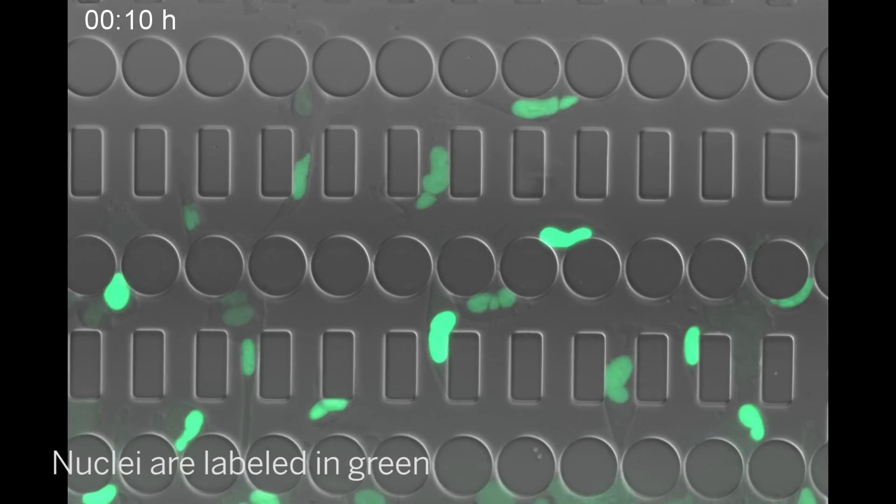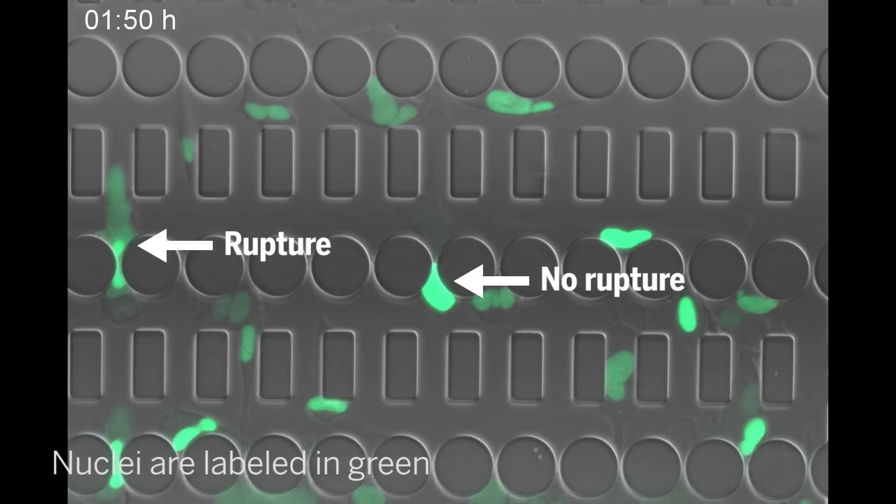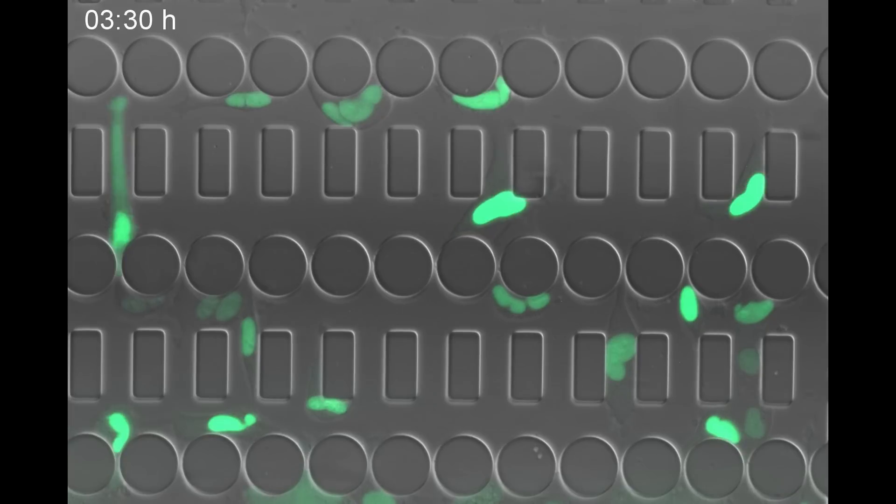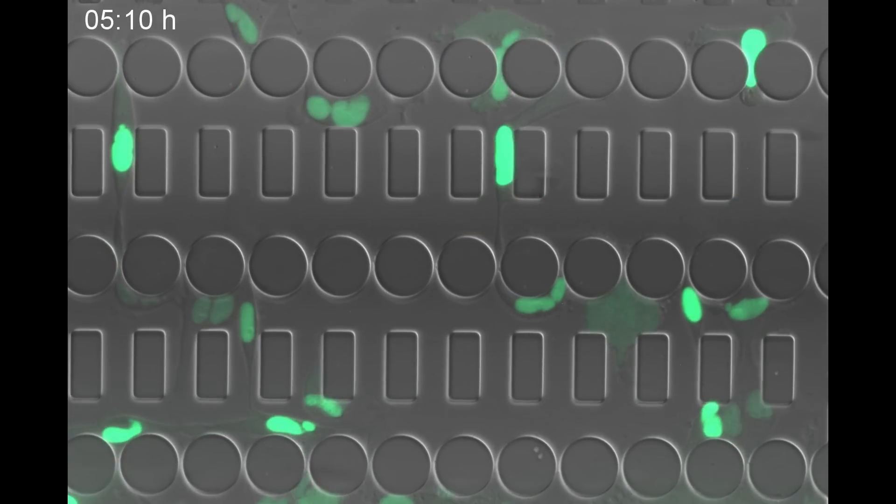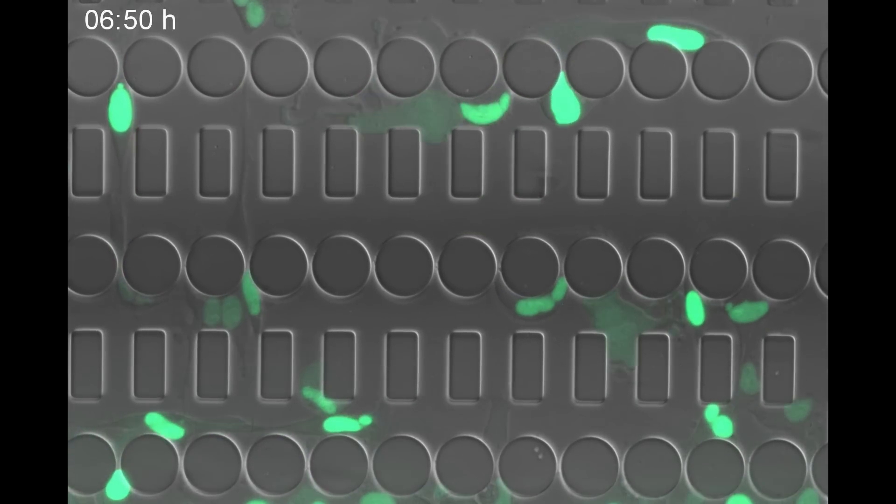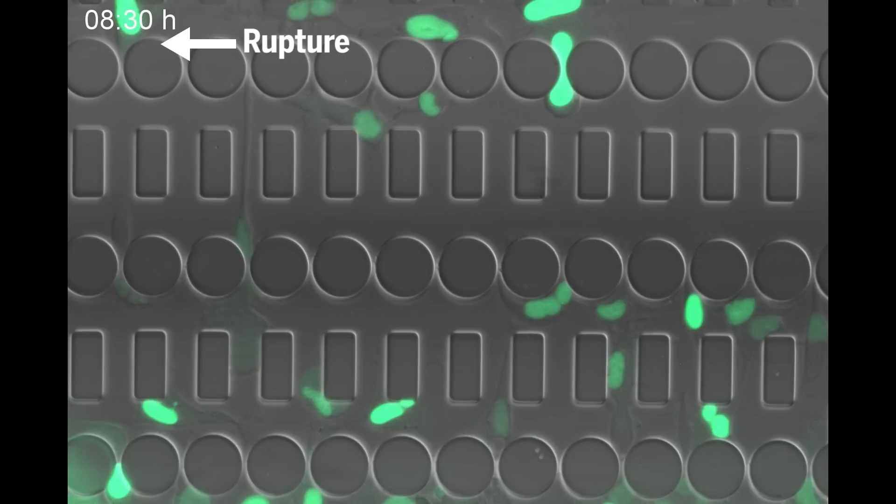Here, several cancer cells are slithering through a miniature obstacle course. When a cell has to struggle through a narrow passageway, its nucleus pops, spilling the green marker into its body.